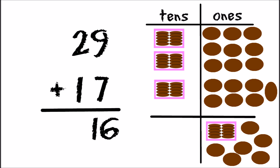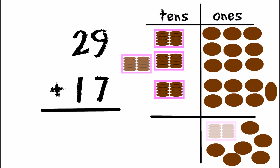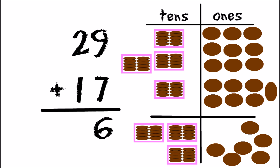Now we have to move our full box of cookies out of the ones column and over to the tens column with all of the other boxes. Then we only have six cookies left in the ones column, so we'll write six in our ones column. Let's count how many boxes of ten cookies we have now: one, two, three, then the one that came over from our ones column — four. We have four boxes of ten cookies, so in our tens column we write four. We have four in our tens column and six in our ones column: forty-six. Twenty-nine plus seventeen equals forty-six.